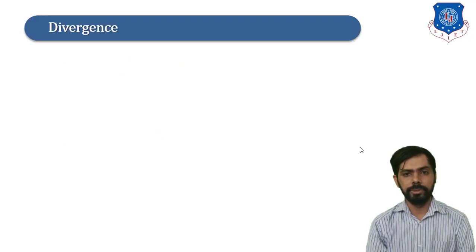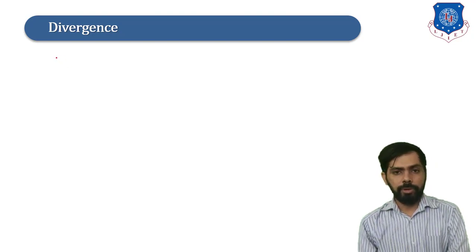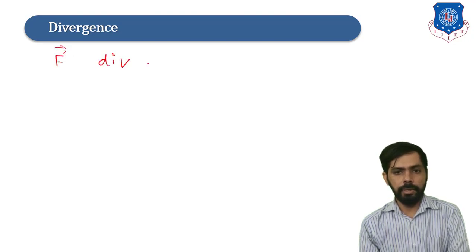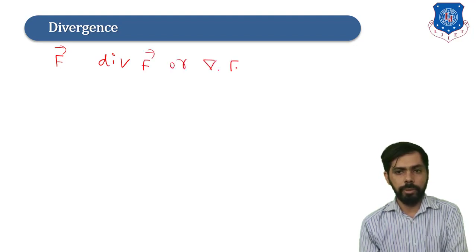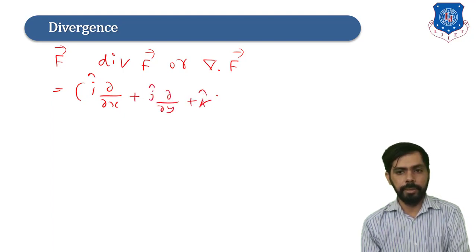First we will discuss divergence. The divergence of a vector field f is denoted by div f or del dot f. Del is the vector differential operator defined as i(∂/∂x) + j(∂/∂y) + k(∂/∂z).